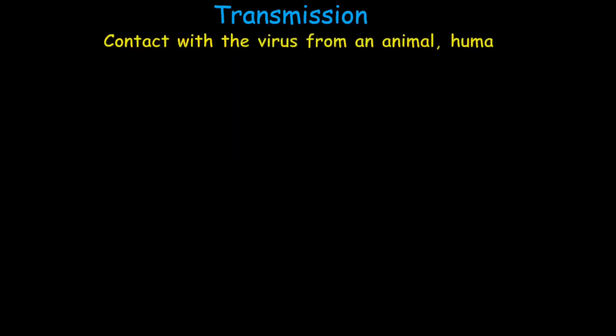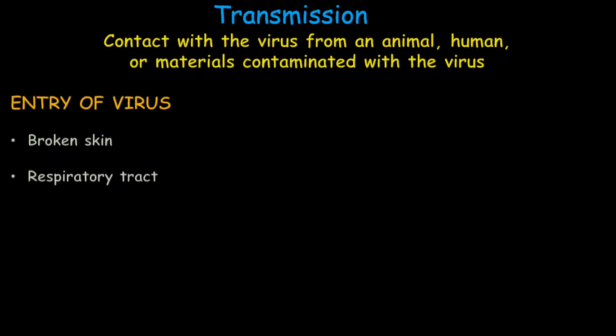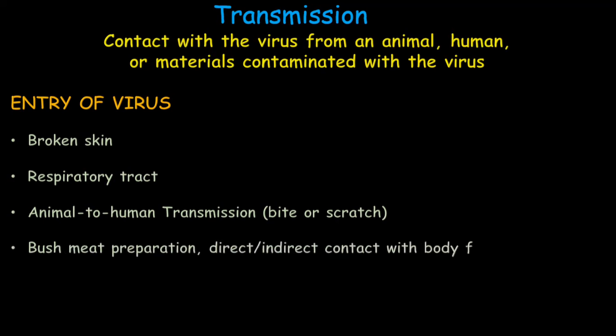This virus spreads when a person comes into contact with the virus from an animal, human, or contaminated material. The virus enters the body through broken skin, the respiratory tract, or mucous membranes such as the eyes, nose, or mouth. Animal-to-human transmission can occur through bites, scratches, meat preparation, or direct and indirect contact with body fluids. Human-to-human transmission can occur through large respiratory droplets during prolonged face-to-face contact.